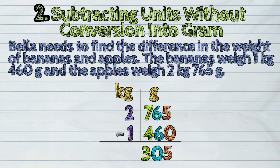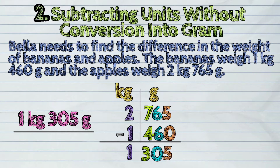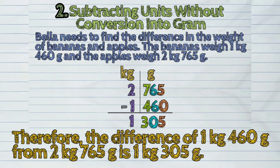Again, if we convert this into kilograms, the answer is 1 kilogram 305 grams. Therefore, the difference of 1 kilogram 460 grams from 2 kilograms 765 grams is 1 kilogram 305 grams.